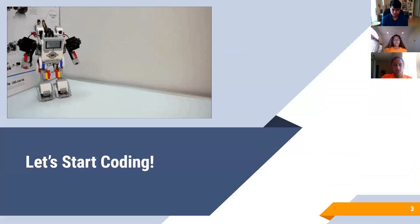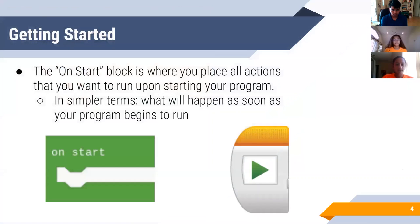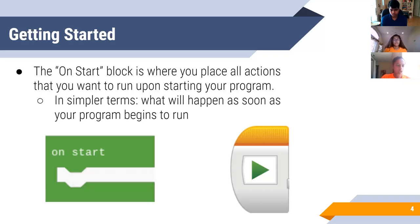Now let's head into some actual coding. One of the most important blocks in EV3 is called the OnStart block. This is where you're going to place all the actions that you want to run when you start your program. In simpler terms, anything that you want to run as soon as you click the start button will be connected to this block.